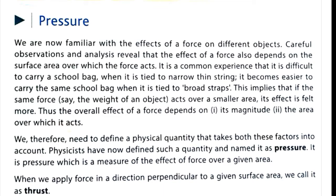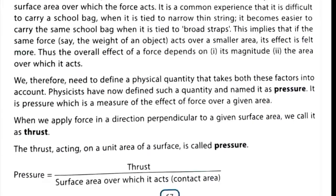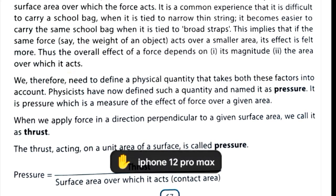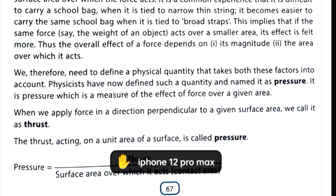Force depends on magnitude as well as area. Magnitude means value — for example, 4N, 5N, or 10N force. Area means the amount of contact. If the area is small, then pressure will be large because area and pressure are inversely proportional to each other.